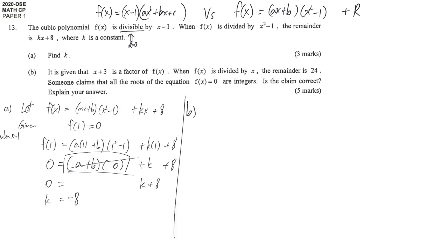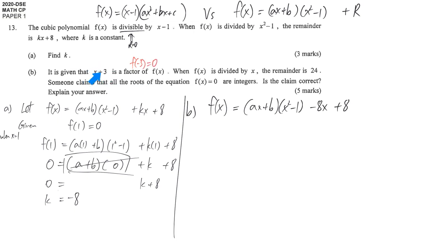In part b, we update the information: f(x) equals (ax plus b)(x squared minus 1) minus 8x plus 8. The additional information is that x plus 3 is a factor of f(x). For similar reasons, f(negative 3) equals 0 — when f(x) is divided by x plus 3 the remainder is 0.